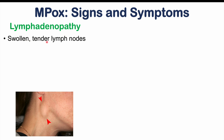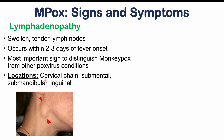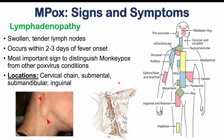Lymphadenopathy is actually the most important sign to distinguish M-pox from other poxvirus infections. The locations of swollen, tender lymph nodes are often related to the initial site of infection, and can include the cervical chain in the neck, submental under the chin, submandibular along the jawline, and inguinal lymph nodes in the groin area.